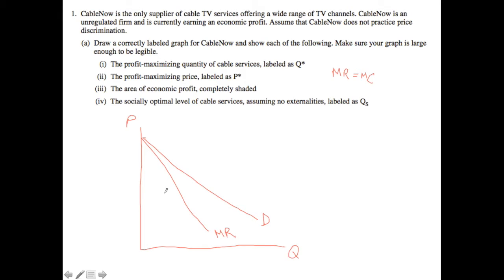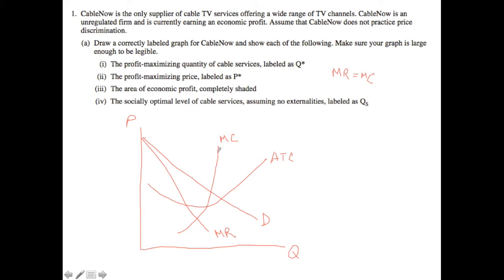We are faced here with a typical marginal cost and average total cost curve. The average total cost reaches some point of minimum efficient scale and then comes back up. And we also have a marginal cost curve that is upward sloping. When marginal cost is less than average total cost, average total cost will be falling. And then once average total cost starts rising again, marginal cost is greater than average total cost. That's how we derive the overall shape of marginal cost based on average total cost.